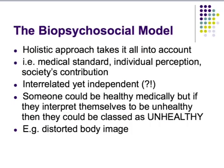There is one theory produced by Engel, who came up with the bio-psycho-social model back in 1977. It's a holistic, all-encompassing approach that takes all three — medical standards, individual perception, and how society contributes — into account. He said they are all interrelated, yet could still be independent and contribute in their own way to health. For example, someone could be medically healthy — low blood pressure, low resting heart rate — but if they interpret themselves as unhealthy, then according to this model they would be classed as unhealthy.